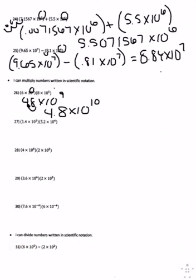Number twenty-seven, you multiply 1.4 times 5.2. You get 7.28 times 10 to the 7th. Again, add the exponents.